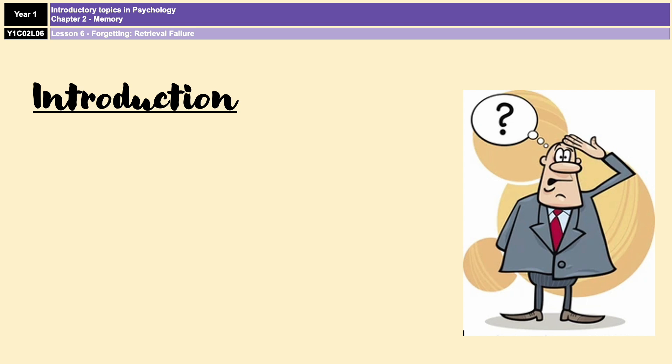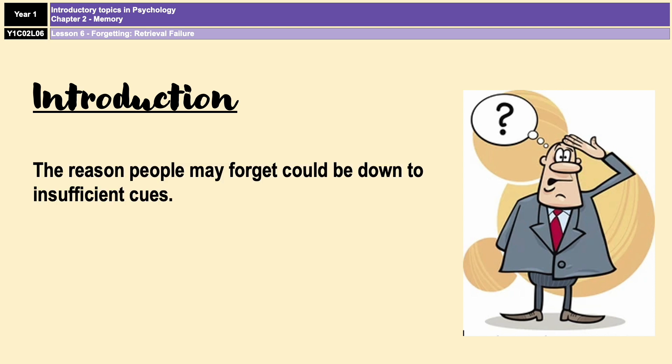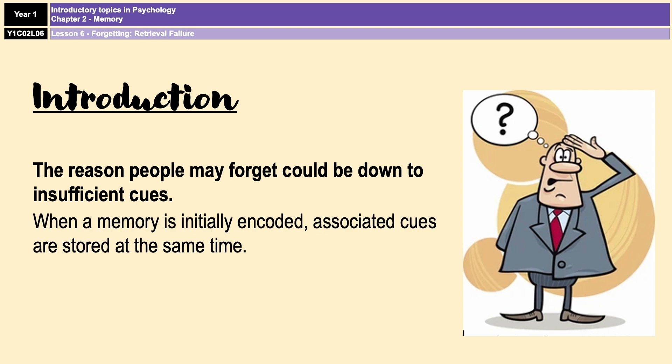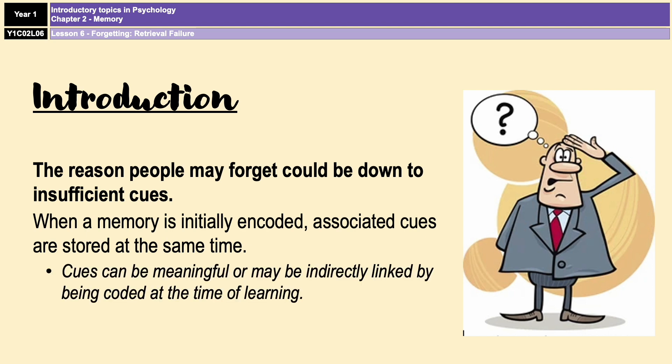Retrieval failure is an explanation for forgetting in long-term memory. It suggests that people forget things due to the absence of cues. Cues are pieces of information that were present at the time and have been coded with that memory. They can be meaningful, or they can be completely irrelevant to the memory, other than they happen to be there when the memory was initially coded. They can also be internal or external.